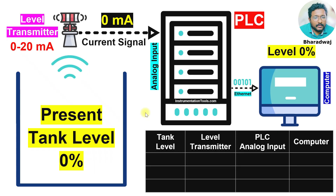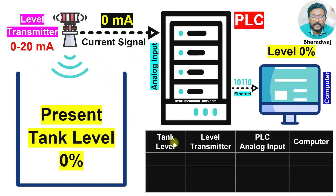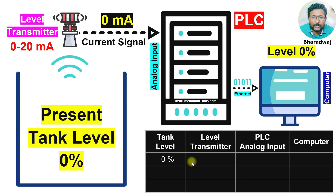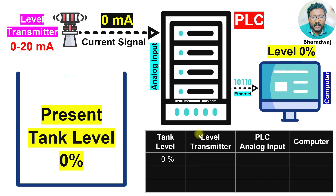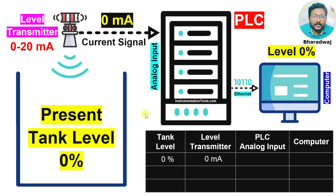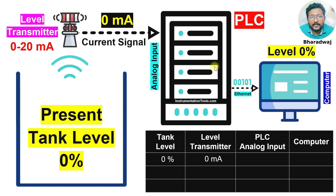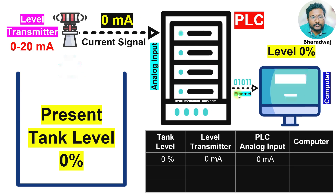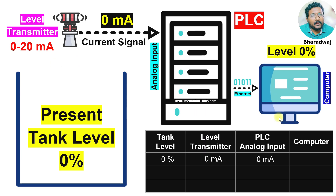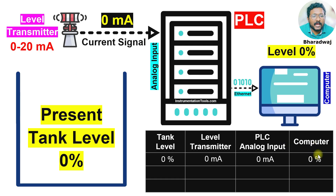I will take a table. The first column is tank level — the present tank level is 0%. The level transmitter output is 0 mA. The PLC is also receiving 0 mA. The computer displays a level reading of 0%.